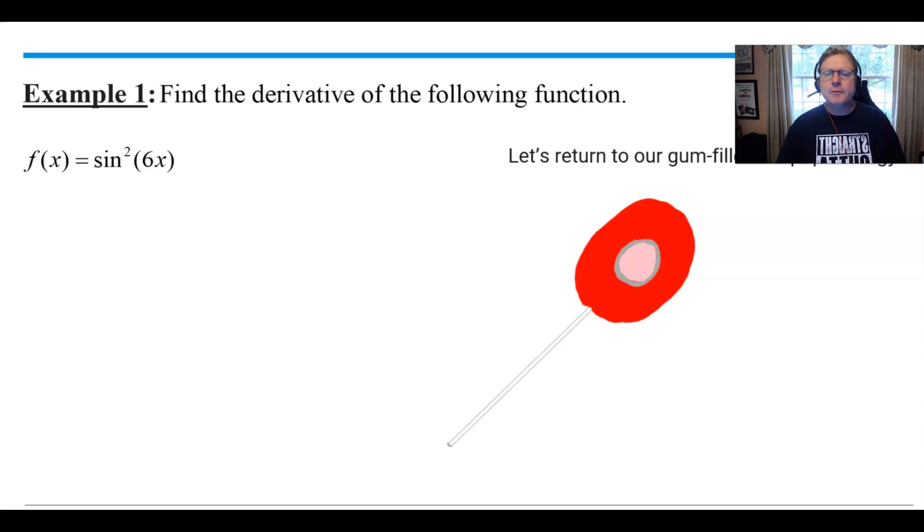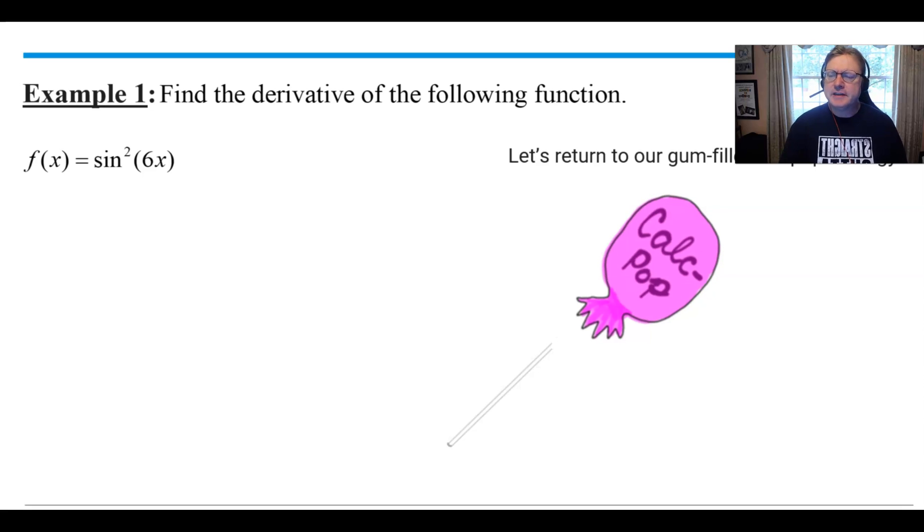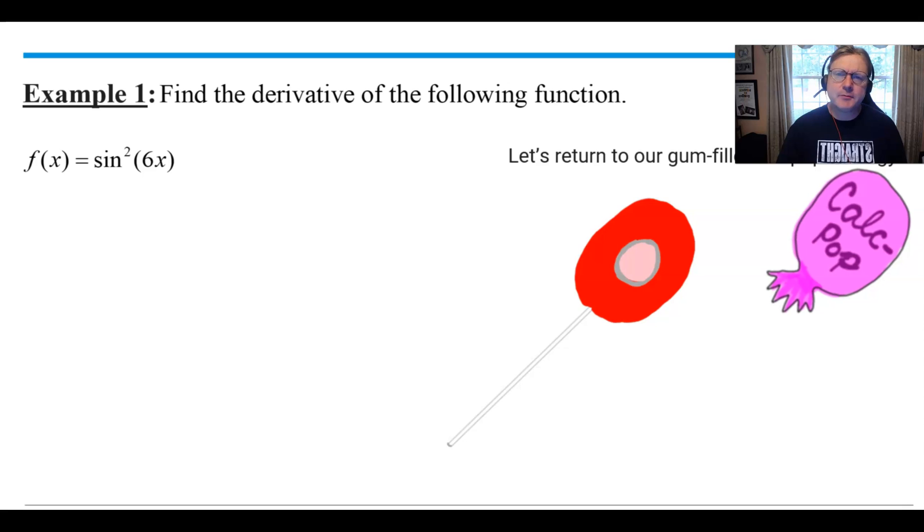We have this beautiful sucker with this candy shell around it and the gum in the middle, but what we sometimes forget is that this sucker when we first pick it off the shelf has a wrapper around it. This will be our calc-pop. As we work through a double usage of the chain rule, we're going to have to pull the wrapper off the sucker, then work on that candy shell around the outside, and only then can we get to the gum-filled center. Those are our three different layers, and the chain rule double usage comes from the fact that we're going from wrapper to candy and then from candy to gum-filled center.